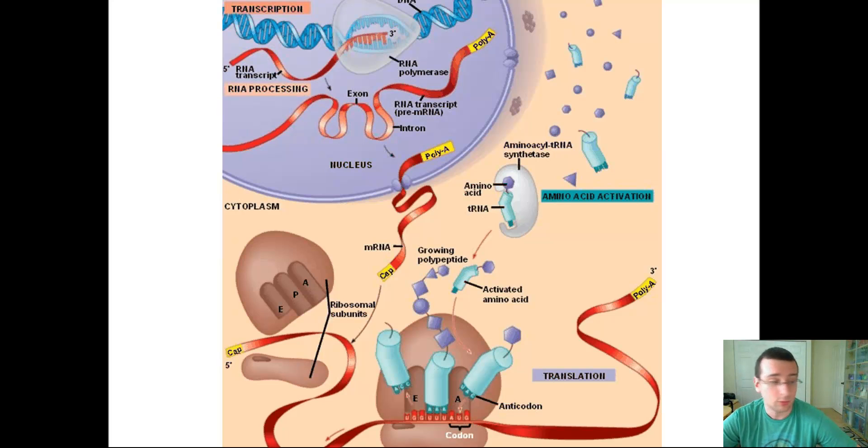Another set of enzymes called elongation factors help these attachments take place. An enzyme called peptidyl transferase will actually help the polypeptide chain elongate over time. All of this will be controlled by the pairing of that codon with that anticodon with the help of elongation factors.